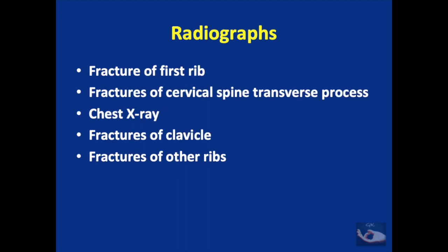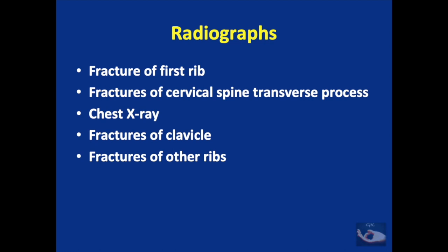X-rays may show fracture of the first rib, fractures of the cervical spine and transverse processes. Chest X-ray may show elevation of the hemidiaphragm indicating phrenic nerve palsy. Fractures of the clavicle and other ribs can also be seen. The next investigation usually ordered is the myelogram to demonstrate traumatic pseudomeningocele.